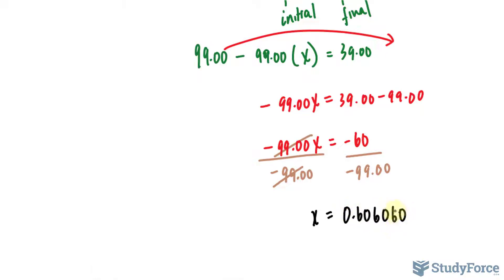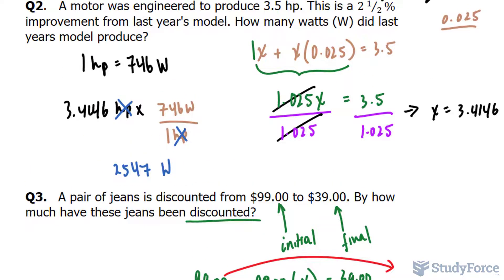We'll multiply that by 100% to get the percentage. And that's roughly equal to 60.6% decrease. So the jeans went on sale for 60.6% of their original value, which ended up being $39.00.